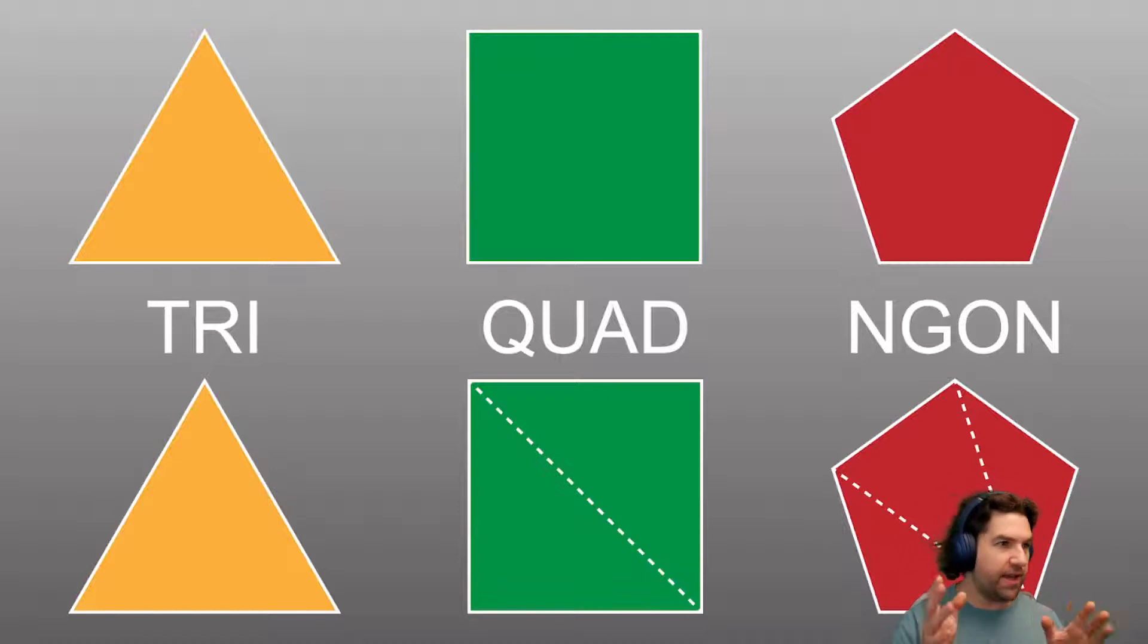To bring it back into computers, we have these three things: a triangle, a quad, and an N-gon. You've probably heard me use some of these quad terms before. A tri is a triangle—we say tri because we say it a lot. These are any three-sided face, three verts connected together by three edges.